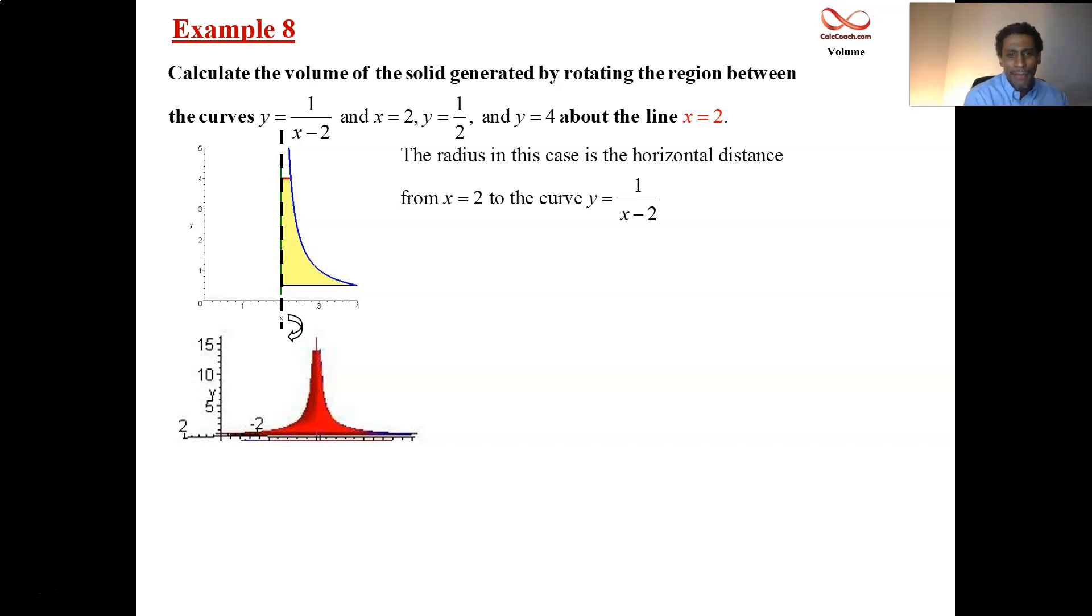Okay. The radius is the horizontal distance from the axis of rotation through the region. This green distance here is the radius. And that's an x equals distance, horizontal x equals distance.